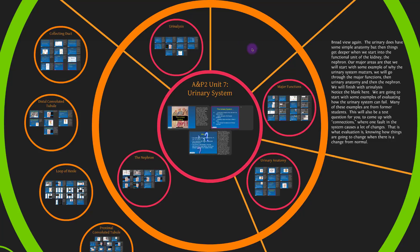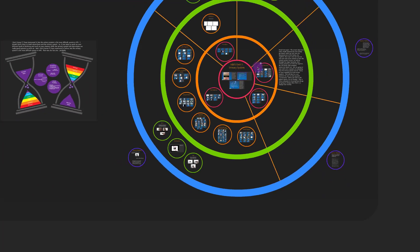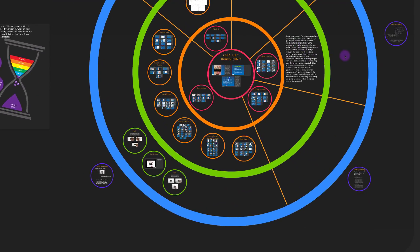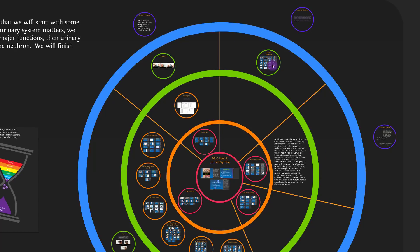Notice the blank area here, which is normally just basic fact-based knowledge. We're going to go through the big ideas and move them out into higher thinking. We'll start with some examples of evaluating how the urinary system can fail — many from former students. This will also be on the test: coming up with connections where one fault in the system causes a lot of changes. That is what evaluation is — knowing how things change when there's a change from normal.